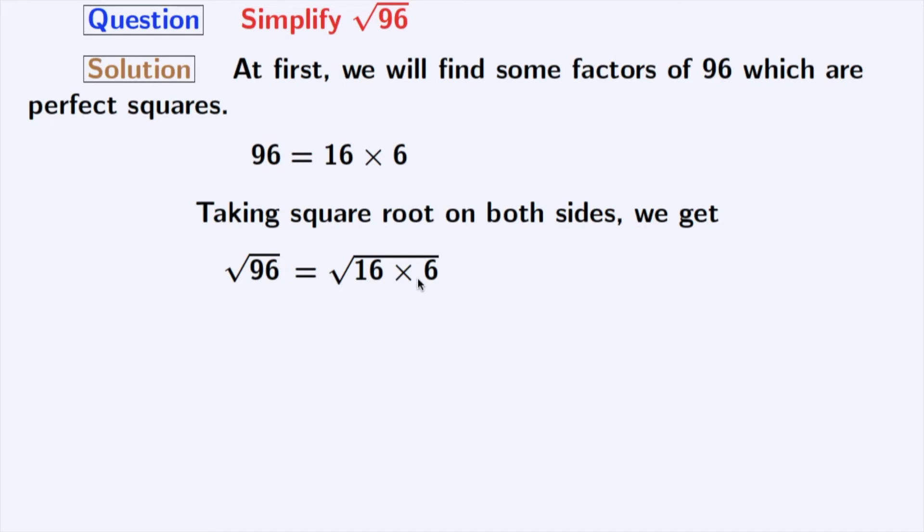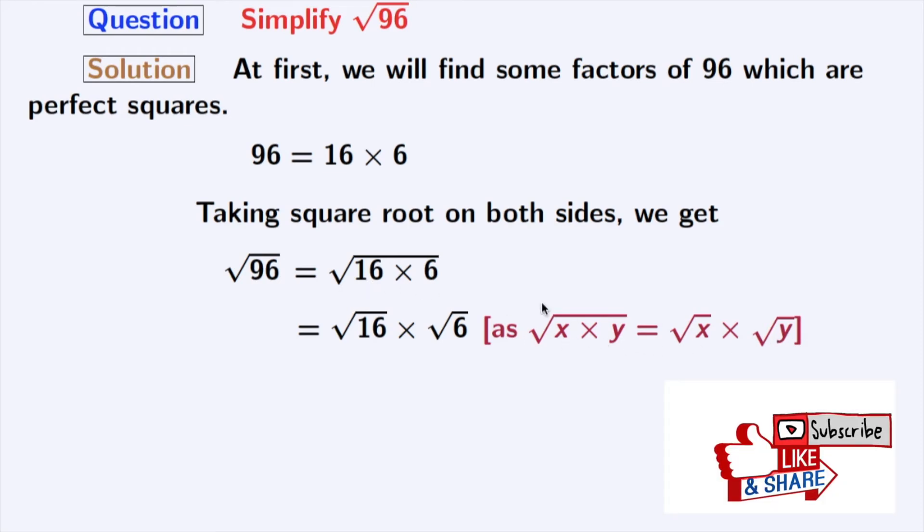After rearranging, we get square root of 16 times square root of 6. As we know that square root of x times y is equal to square root of x times square root of y. Where x is 16, y is 6.